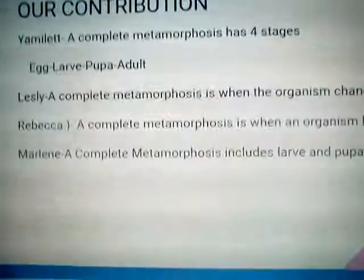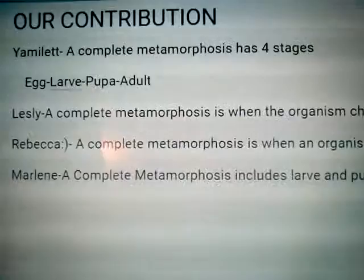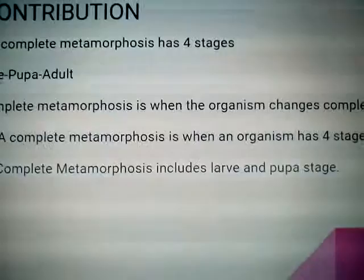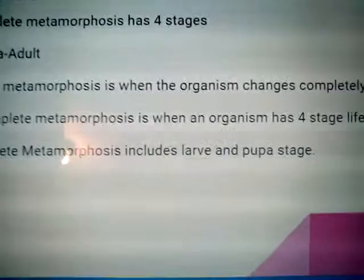Our contribution. A complete metamorphosis has four stages: egg, larva, pupa, and adult. A complete metamorphosis is when the organism changes completely and has a four-stage life cycle. A complete metamorphosis includes a larva and pupa stage.